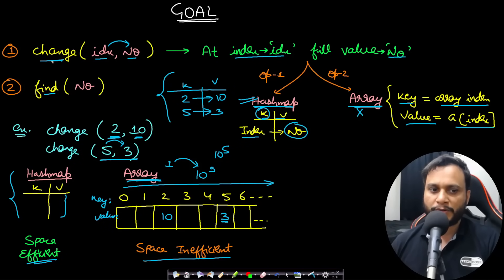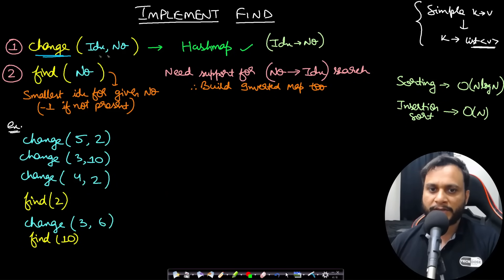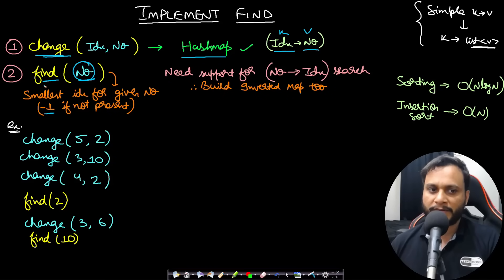For the change operation we will use a simple key-value hash map with index as key and number as value. For the find operation, we need to find the smallest index at which a given number is present, or return -1 if absent. Since find searches by number, we need a second 'inverted' map where the key is the number and the value is the index.